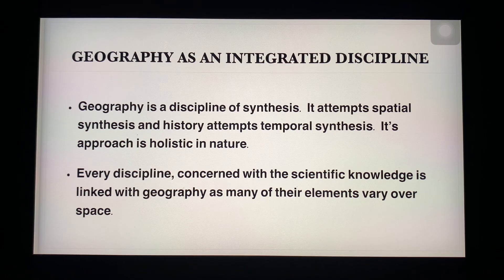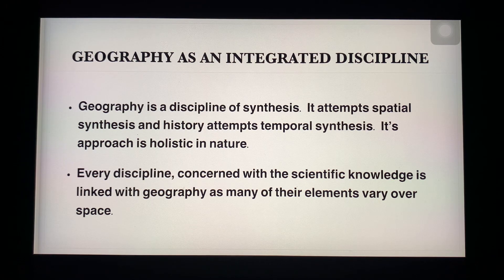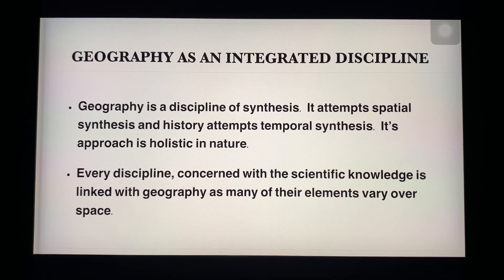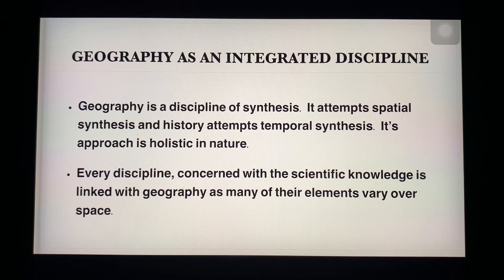Every discipline concerned with scientific knowledge is linked with geography, as many of their elements vary over space. The branches related to geography could be population geography, hydrology geography, economic geography, and maths and astronomy. These branches have a concern with scientific knowledge and connect to geography through their elements in space — they are connected to each other.